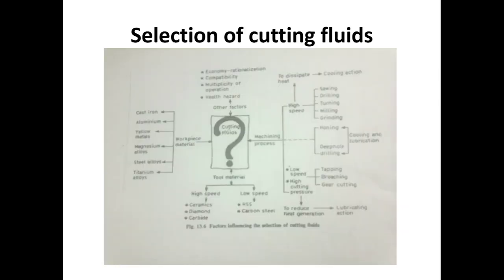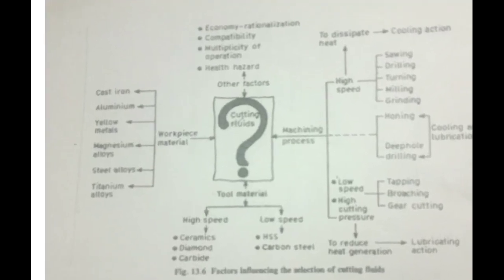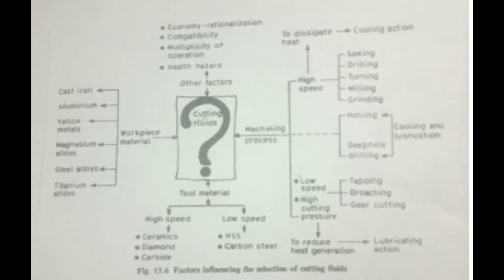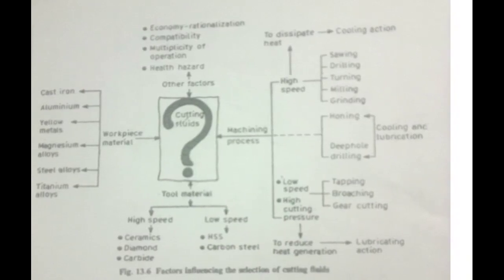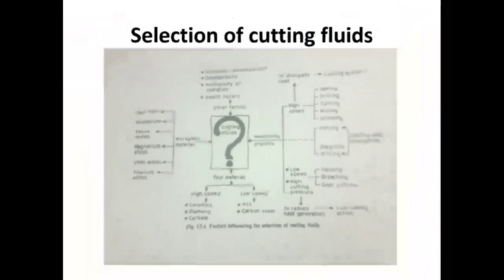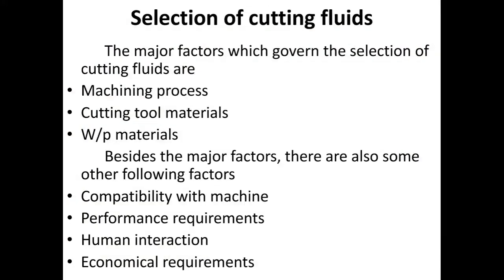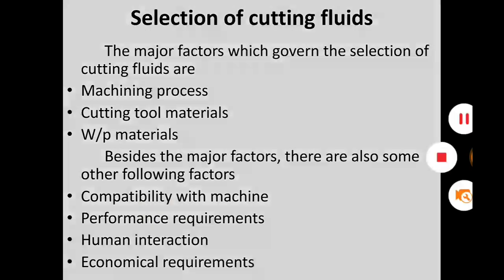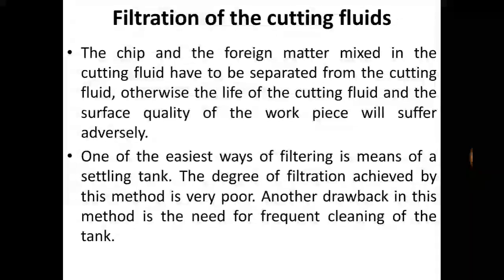For the selection of cutting fluids, a flowchart is used. Key factors include workpiece material, tool material, machining process, compatibility with machine performance requirements, human interaction considerations, and economical requirements.